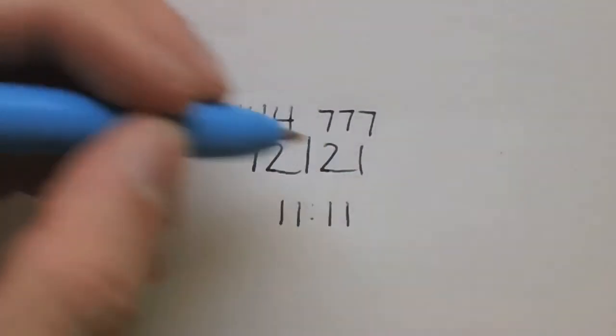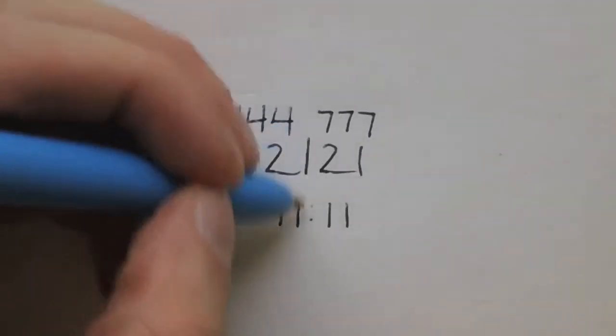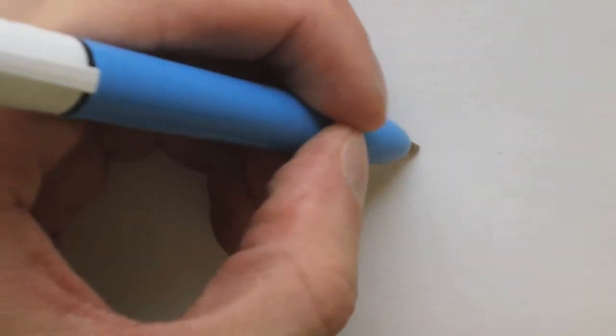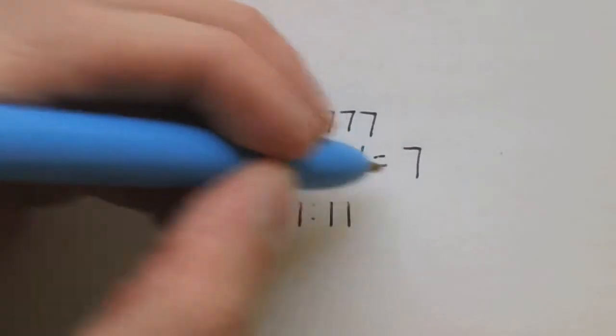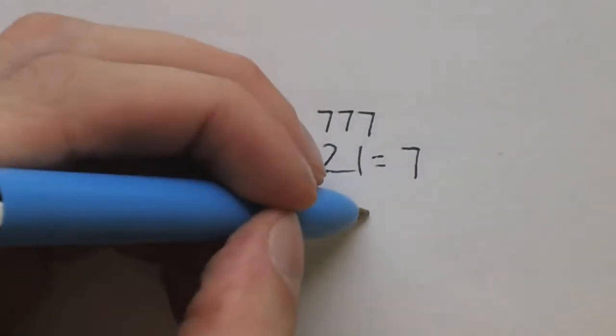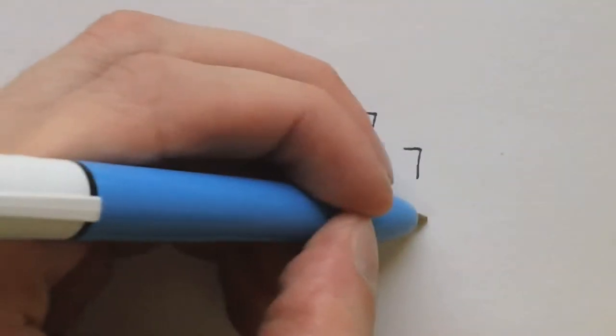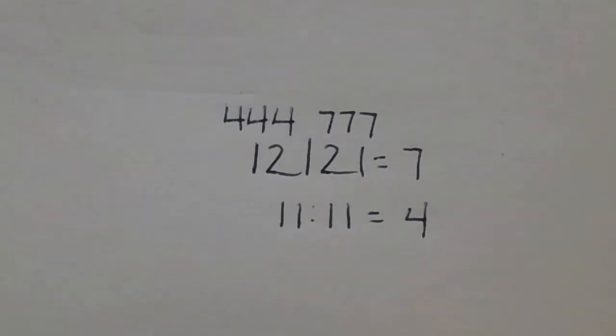1, 2, 1, 2, 1. Because the slash looks like a 1. If you add these up, it equals 7. And if you add up all the 1s, that equals 4. You remember that? That's pretty cool.